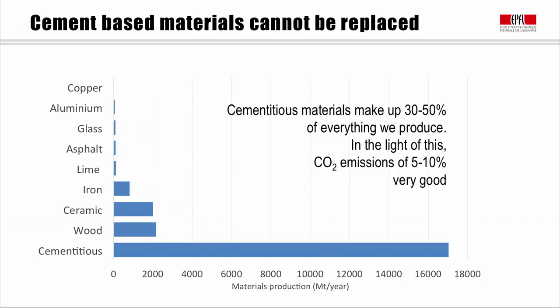In this first slide, we can see the overwhelming dominance of cementitious materials. They make up between 30% to 50% of everything we produce — probably about 50% of solid materials and 30% if we include things like fossil fuels. The fact that they're responsible for CO2 emissions of around 5% to 10% is a very good ratio. We can really see that it would in no way be possible to replace cementitious materials with alternatives at any meaningful level. For example, if we look at the amount of wood produced worldwide, this is between 10% and 15% of the amount of cementitious materials.